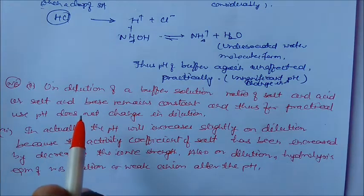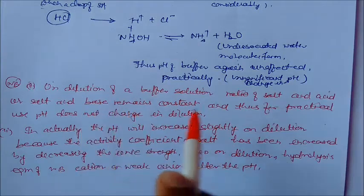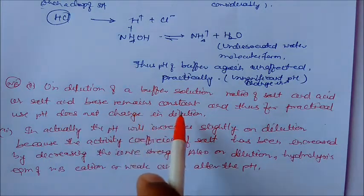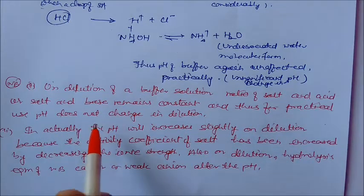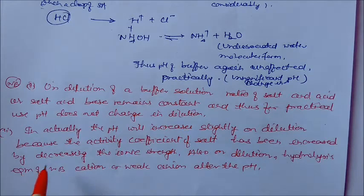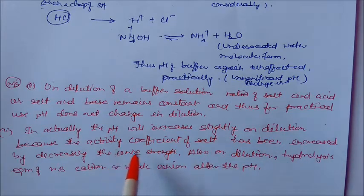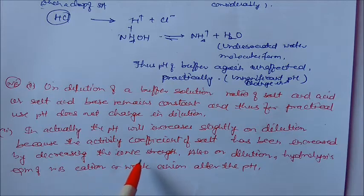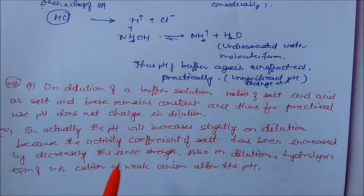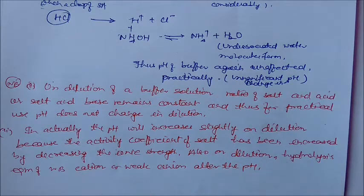On dilution of a buffer solution, the ratio of salt to acid or salt to base remains constant, so for practical purposes pH does not change on dilution. However, pH will increase slightly on dilution because the activity coefficient of the salt increases as ionic strength decreases. Also, hydrolysis equilibrium of weak base cations or weak anions can alter the pH slightly. Keep these two points in mind while studying buffer solutions.